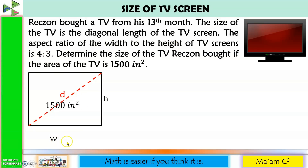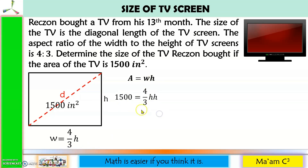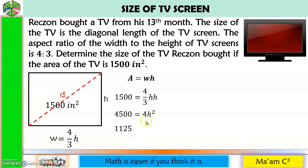We were given the ratio of the width to the height, which is 4 to 3. Therefore, the width is equal to 4 thirds of the height. Recalling the area of a rectangle — the product of two consecutive sides — the area is width times height. The area is 1,500, the width is 4 thirds of H, and H remains H. Applying cross-multiplication: 3 times 1,500 is 4,500, and H times H is H squared times 4, giving 4H squared. Dividing both sides by 4: 4,500 divided by 4 is 1,125, leaving H squared.